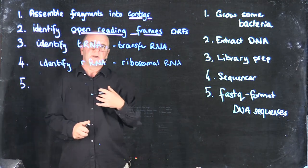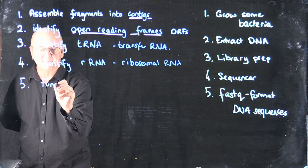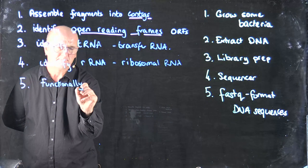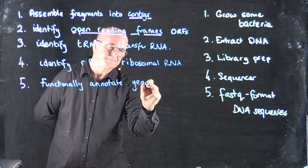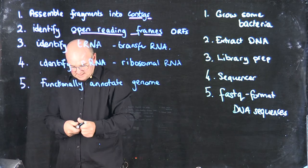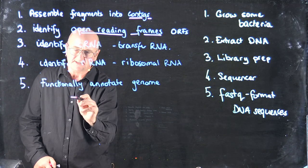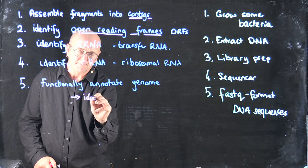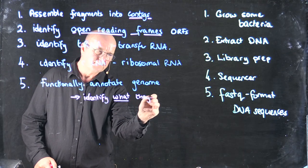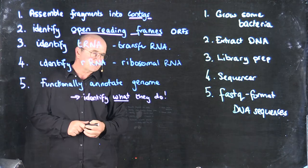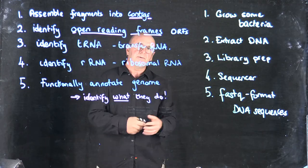The fifth step in our analysis of genomes is to functionally annotate the genome. What this means is we're going to take each of the open reading frames, each of the tRNAs, and each of the rRNAs, and we're going to identify what they do. What is it that those enzymes are doing, those proteins are doing? Are they doing biochemical reactions? Are they helping the cell grow? What's going on there?